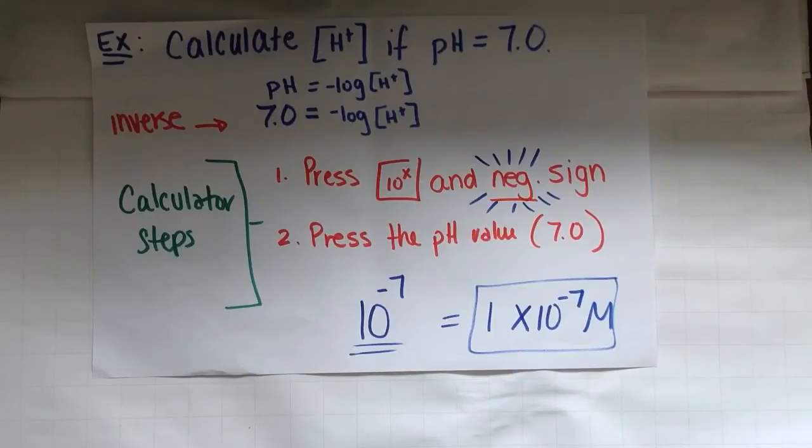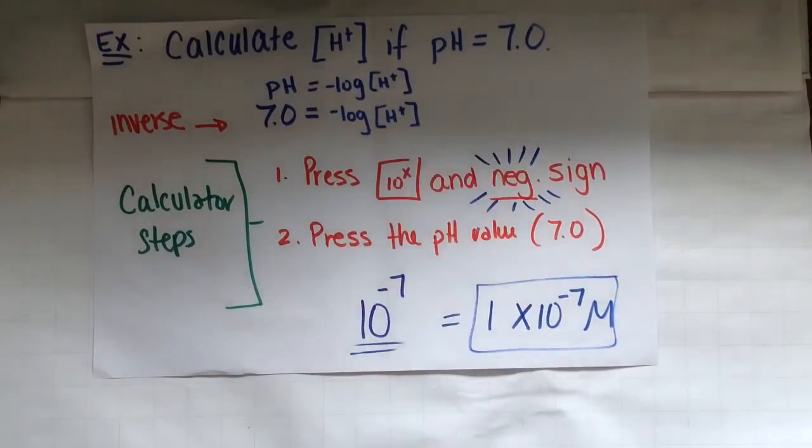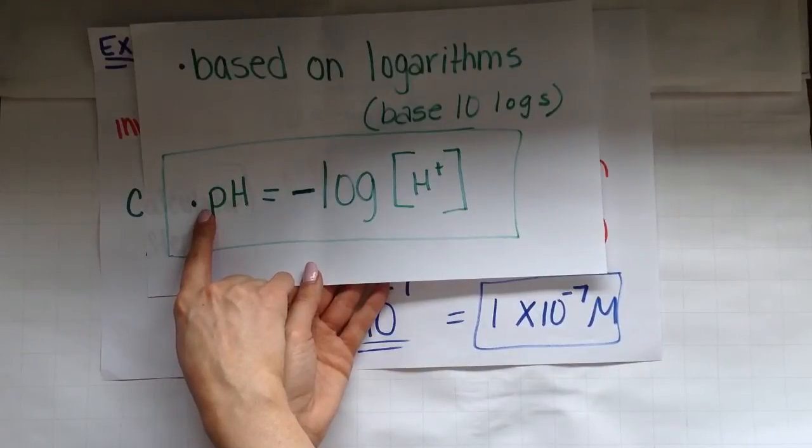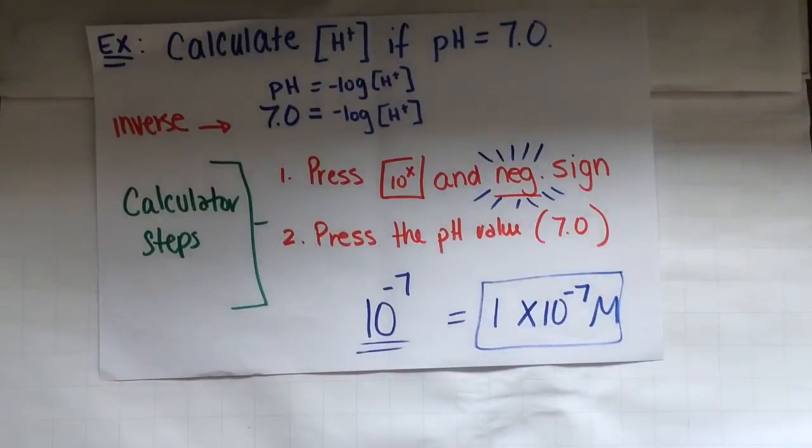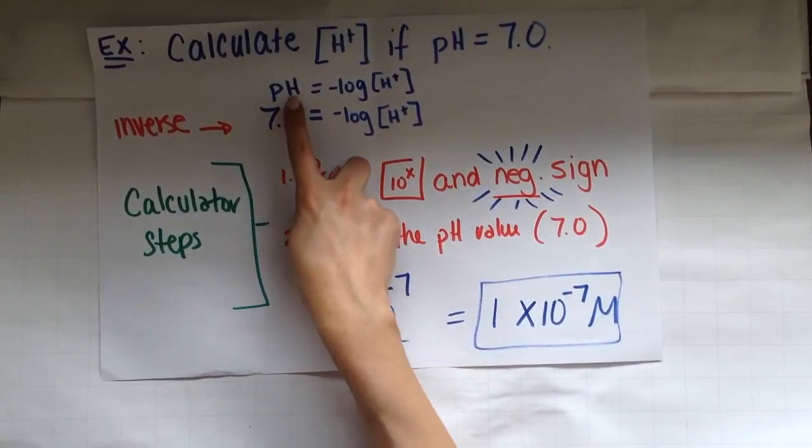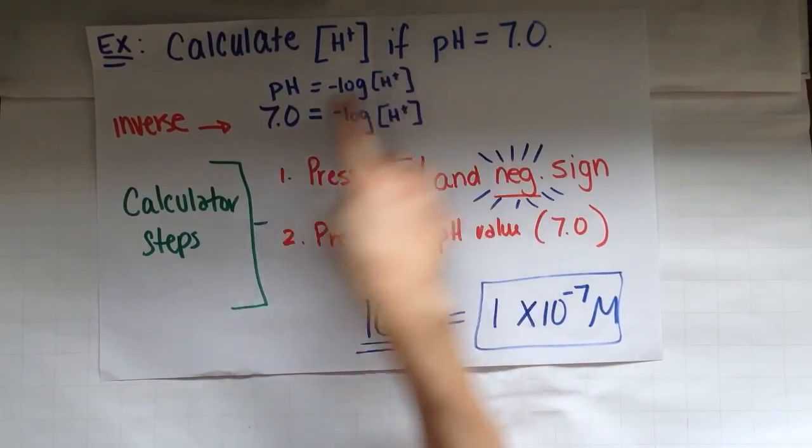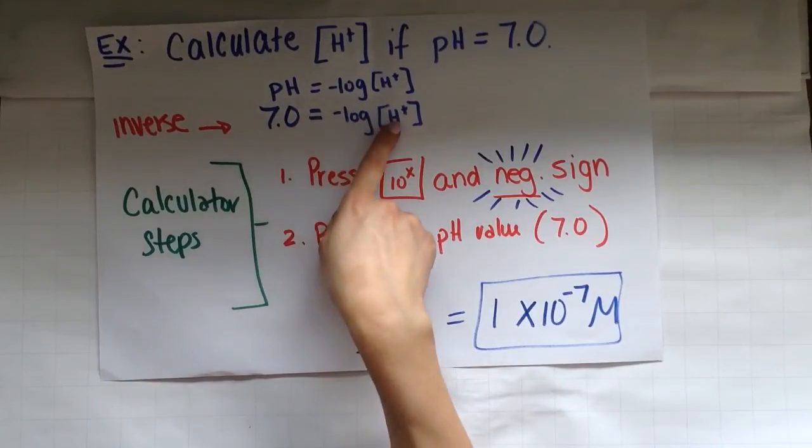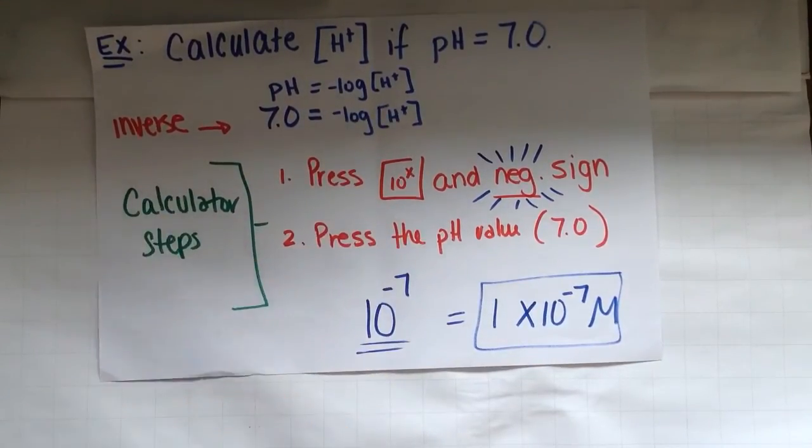So let's take a look at this problem. Calculate the H plus if the pH is 7.0. So again, now I'm giving you this side of the equation. So the inverse is what we're going to be doing. Remember, we're still going to be using our equation. The only difference is I plug in my 7.0 and my pH and I'm solving for this side. Again, this is called the inverse.